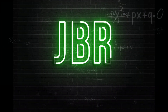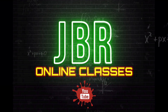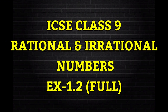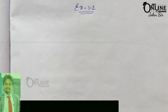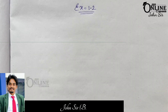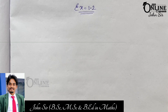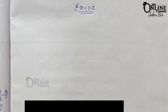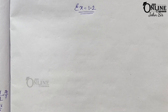Welcome back to my channel JBR Online Classes. Please share and subscribe my channel. Today I am going to start Exercise 1.2 from the book of Emila Garbal — the chapter on irrational numbers. The previous one is rational numbers, that means Exercise 1.1. To find the link, you can check the description box.